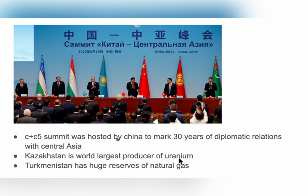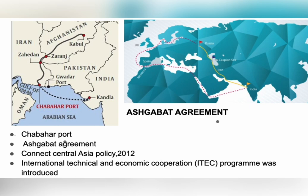Kazakhstan is the world's largest producer of uranium, which is used to generate nuclear power, making good relations with Kazakhstan very important for India. Turkmenistan has huge reserves of natural gas, which is an important fuel for sustainable development. In order to build good relations with Central Asia, India has built many development projects in Central Asian countries and made several peaceful, partnership, and strategic agreements. One of these is the Chabahar Port built in Iran, which connects Iran to Afghanistan.